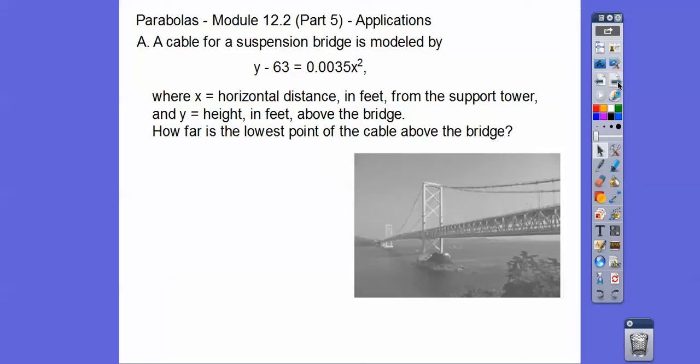So here we have a cable for a suspension bridge, and it's modeled by this equation right here. Y equals - Y is your up and down movement, X is your left and right movement. So can you see this suspension cable going down and coming back up? It makes a parabola doing that. X is our horizontal distance in feet from the support tower, and Y is the height in feet above the bridge.